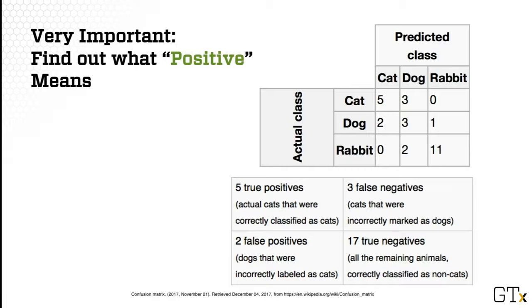When analyzing any kind of classification result, it's very important to clearly state what you mean by positive. Positive often means the thing you care about in your classification — for example, in cancer detection, positive often means someone having cancer. But often it's not really that clear. The drawback of not clearly stating what positive means is that you can get completely opposite interpretations. For example, if someone says they have a very high true positive rate, you might interpret it differently and end up thinking they have very low accuracy instead.